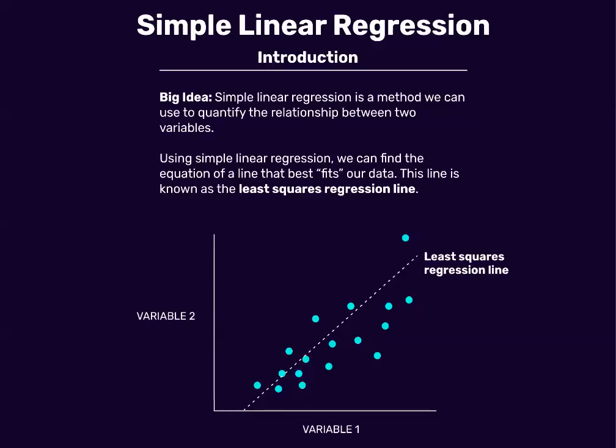In this video we'll be covering a topic called simple linear regression. Simple linear regression is a method that we can use to quantify the relationship between two variables. Using simple linear regression we can find the equation of a line that best fits our data. This line is known as the least squares regression line.